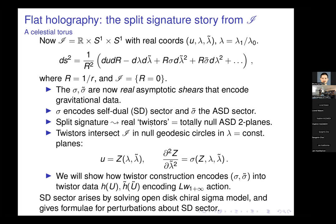In split signature, twisters become real. Twisters are defined as totally null anti-self-dual two-planes on which the metric vanishes. In Lorentz signature you can only have the metric vanishing on a line, whereas in split signature you can have it vanishing on the full two-plane. So we have a whole family of real two-planes — or two-surfaces in the curved case — in the self-dual case.